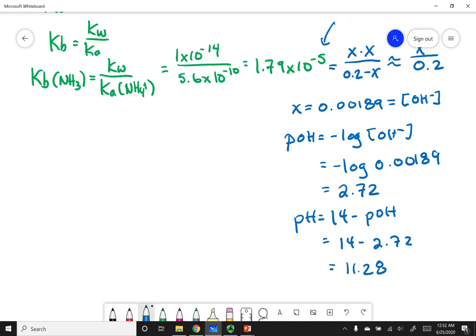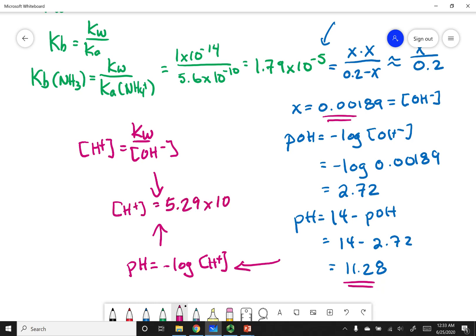Now the last thing I wanted you to do is calculate the H plus concentration. So you could have calculated the H plus concentration by using the formula pH equals the negative log of my H plus concentration. And I have my pH right there. Another way that you could have done it is you could have said that the H plus concentration equals KW over the OH minus concentration. And we just figured out our OH minus concentration. Either route you choose, what you will end up with is an H plus concentration that is equivalent to 5.29 times 10 to the negative 12.